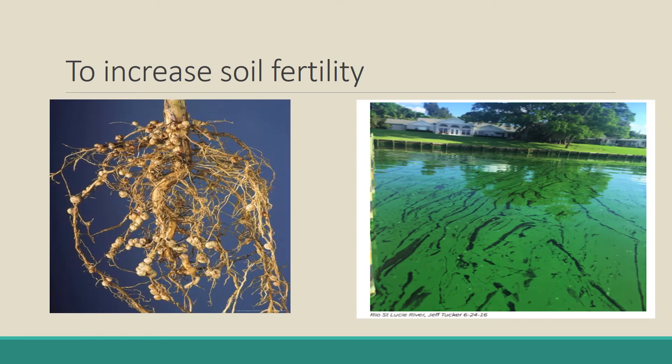Microbes increase the fertility of the soil. Some bacteria live in the root nodules of leguminous plants — for example, Rhizobium bacteria. They fix atmospheric nitrogen, which is utilized by the leguminous plant, and the extra fixed nitrogen remains in the soil, increasing soil fertility. There are also free-living bacteria in the soil that fix atmospheric nitrogen. Cyanobacteria, or blue-green algae, are generally used in paddy fields to fix atmospheric nitrogen.